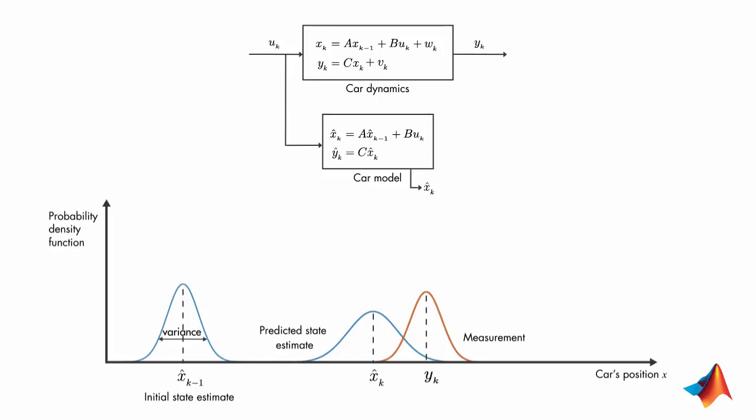And this is done by multiplying these two probability functions together. The resulting product is also a Gaussian function. This estimate has a smaller variance than either of the previous estimates.